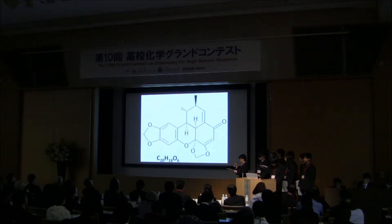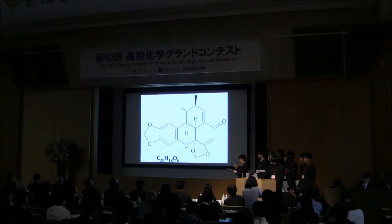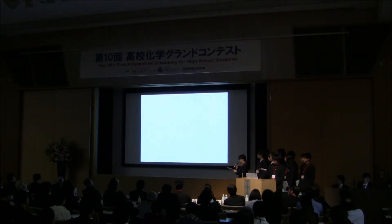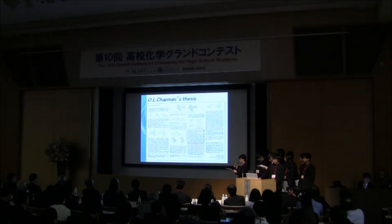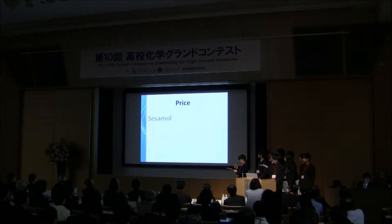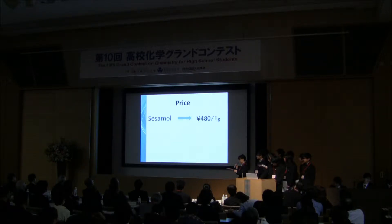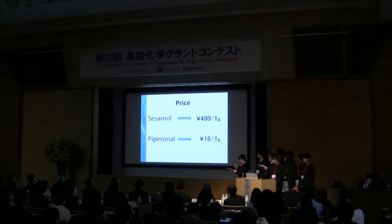His idea was as follows. Carbanol has very complicated structures, but if you can cut the chemical bond at the dotted line, you can divide it into two simple-structured compounds. So, if you manage to combine these two compounds in some way, you will be able to synthesize carbanol. In order to start our experiments, we needed a chemical compound called sesamol. However, sesamol itself was too expensive for us, so we had to synthesize sesamol from piperonol by ourselves. Piperonol is relatively inexpensive, and we managed to buy it.